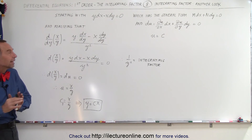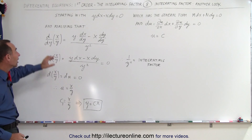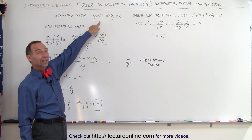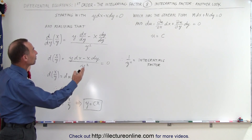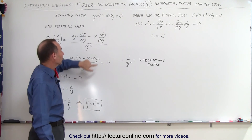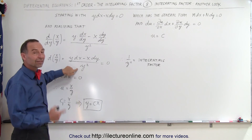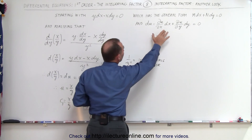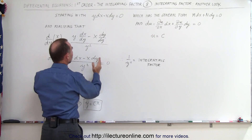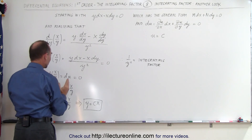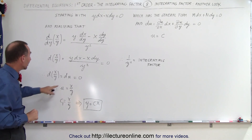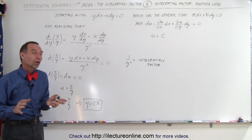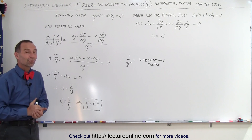So here is an interesting way of looking at an integrating factor. Just by taking the differential with respect to y of x divided by y, we see the numerator matches our differential equation. Multiplying both sides by dy and setting equal to zero gives us 1 over y squared as the integrating factor, which means d(x/y) equals du. Integrating both sides gives u equals x over y, and from that we find the solution to the differential equation. In this case the integrating factor is 1 over y squared.